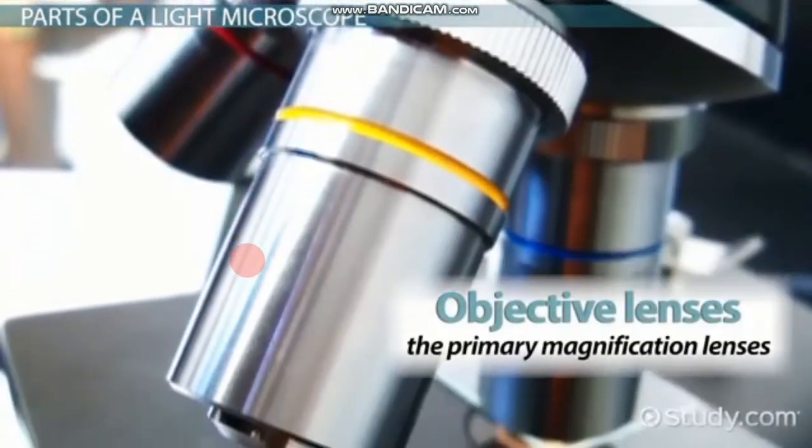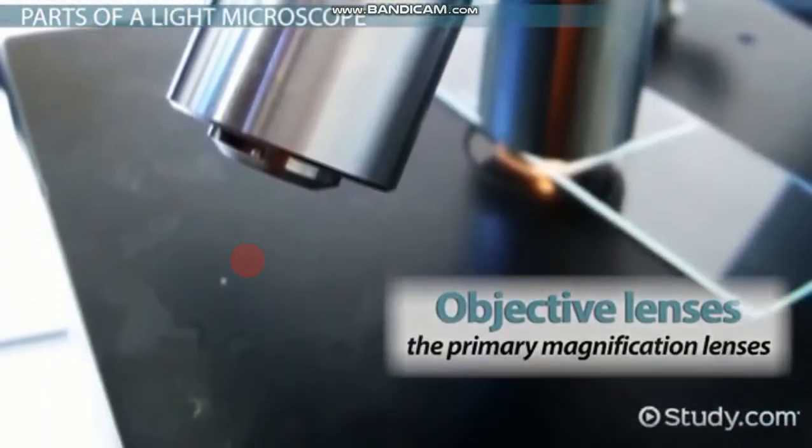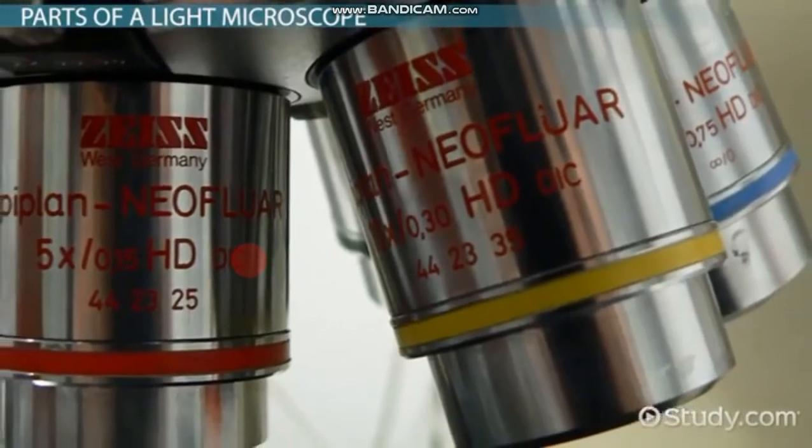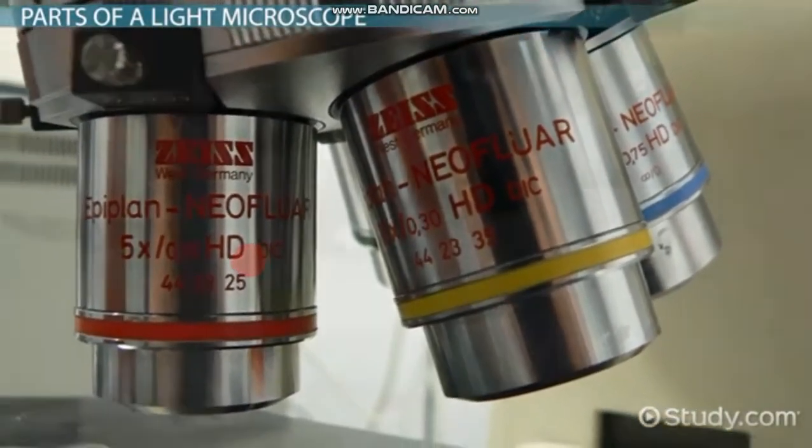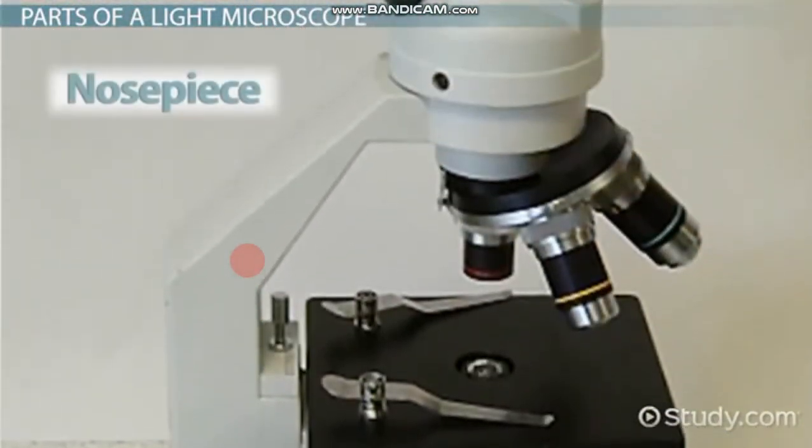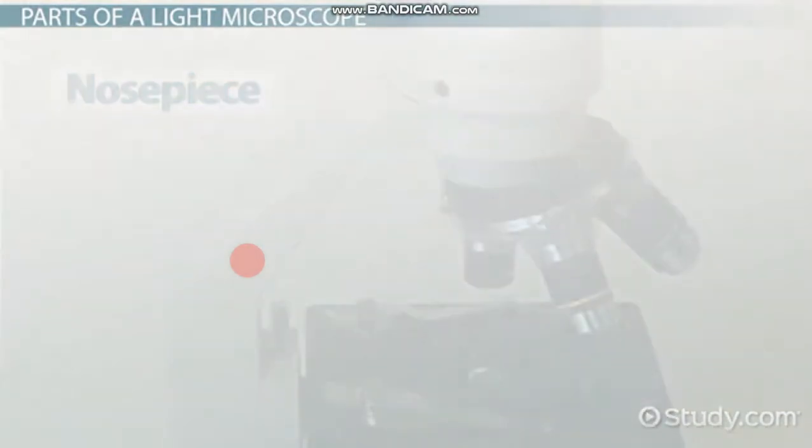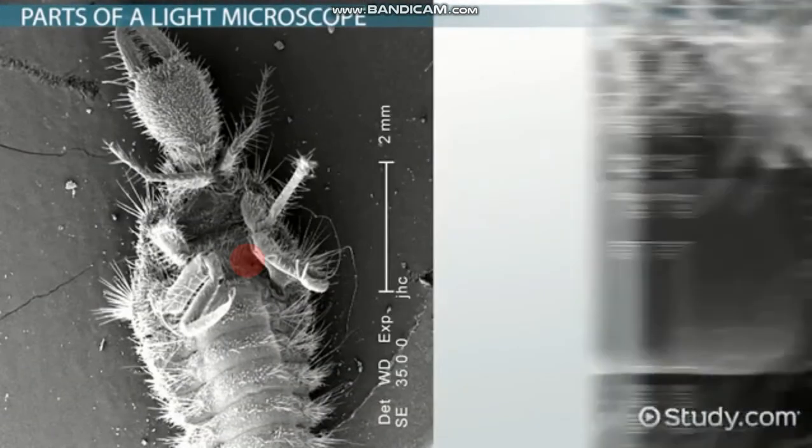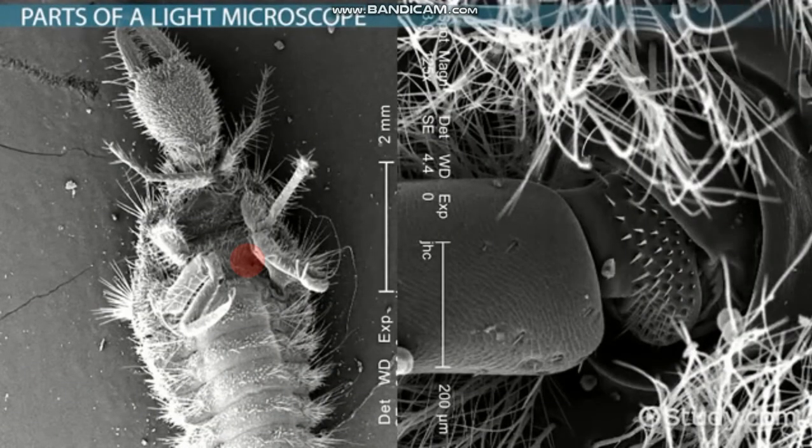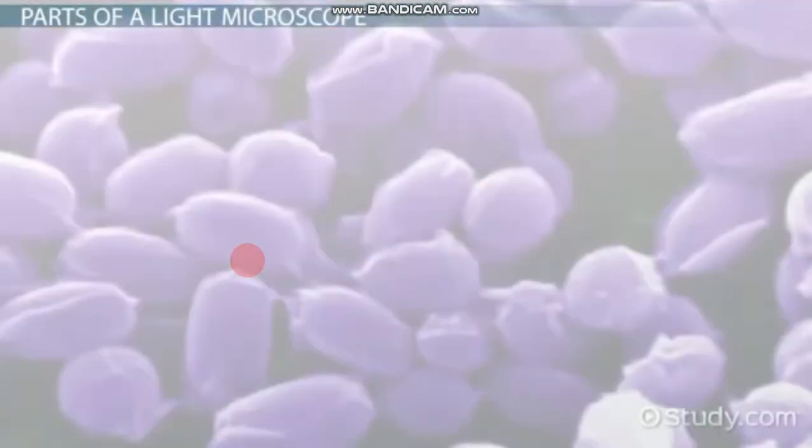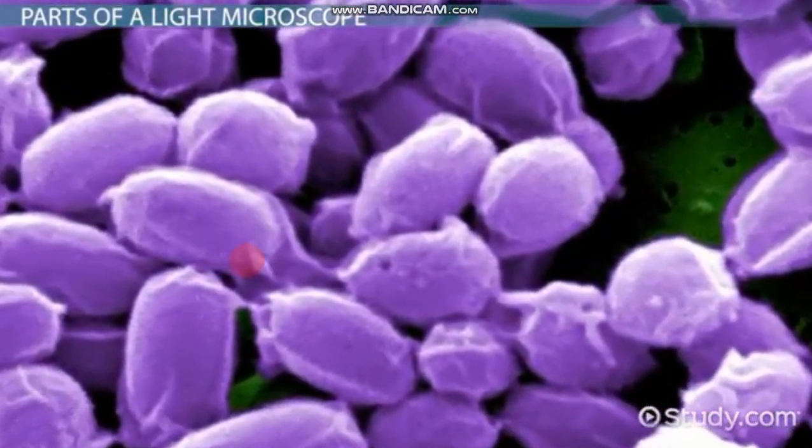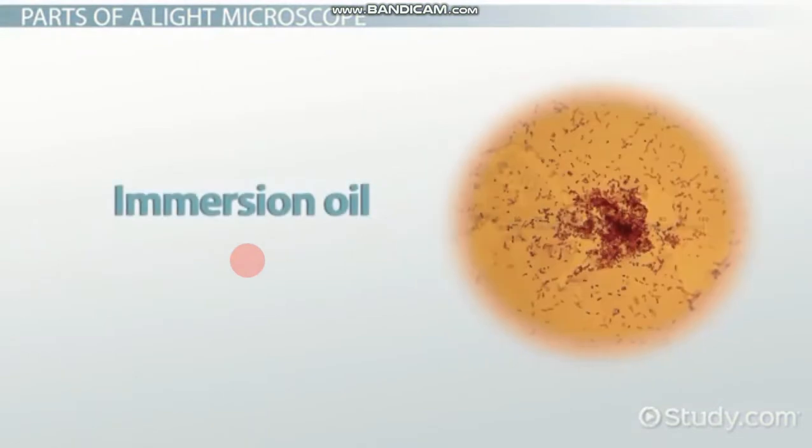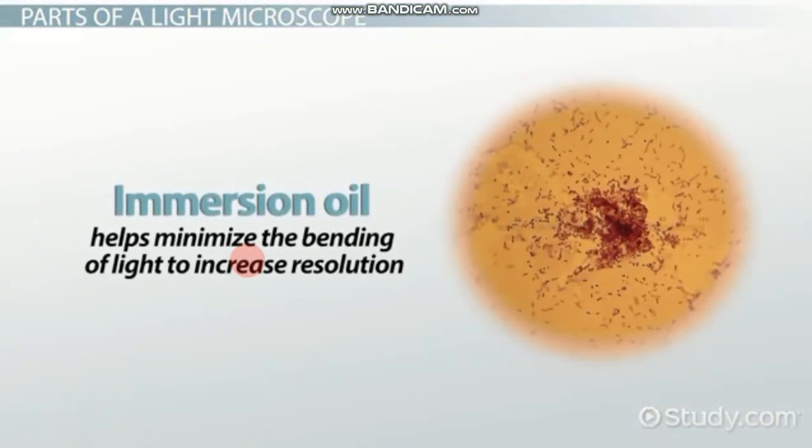Objective lenses are the primary magnification lenses. Most modern compound microscopes will have several objective lenses mounted in a turret. This turret is sometimes called a nosepiece. The user can then go from low magnification to high magnification once they have found an area of interest in their sample. At very high magnification, an objective lens may need to be paired with immersion oil, which helps minimize the bending of light to increase resolution.